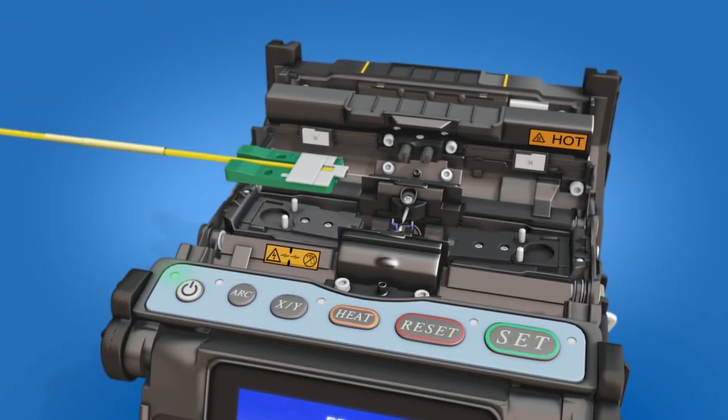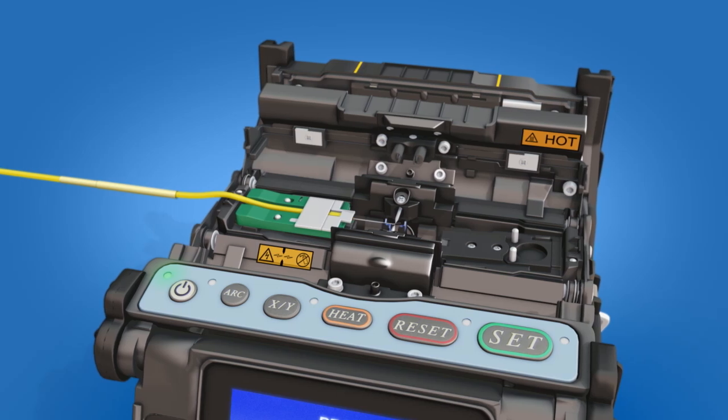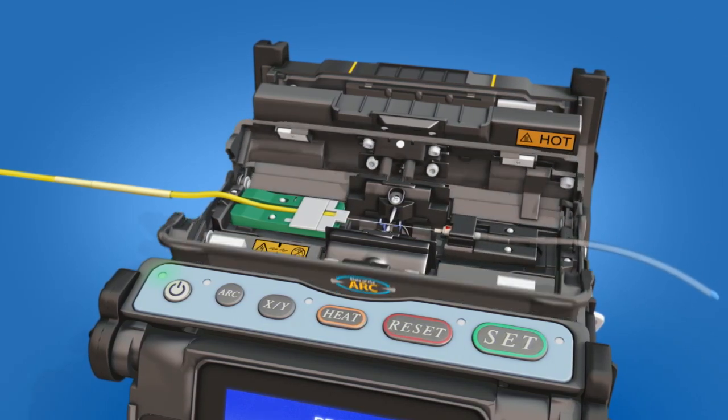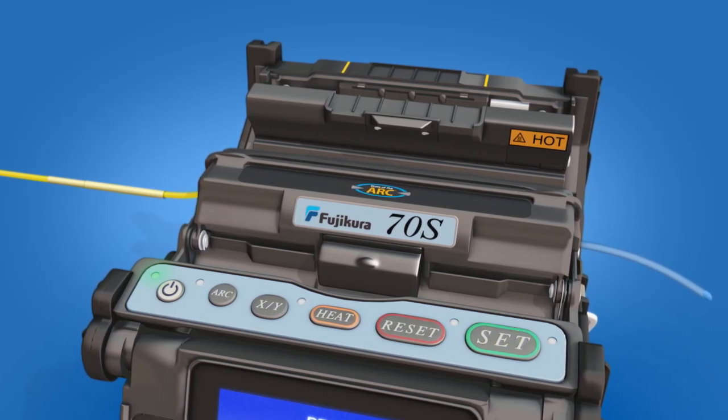Load the fiber holder into the left side of the fusion splicer. Load the ferrule unit into the right side of the fusion splicer and close the wind protector. Splice the fiber to the fuse connect connector.